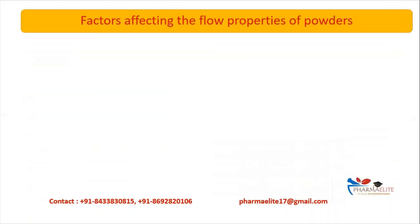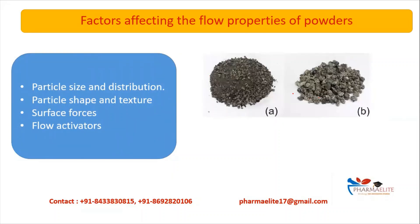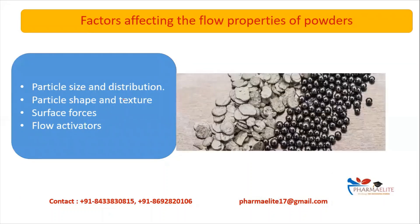Now we look at the factors affecting the flow properties of powder. The first factor is particle size and distribution. There are two types of particles: finer particles and coarser particles. The flow rate is directly proportional to the diameter of the particles. The next factor is particle shape and texture. Spherical-shaped particles can easily glide and show better flow properties than flake-shaped particles.